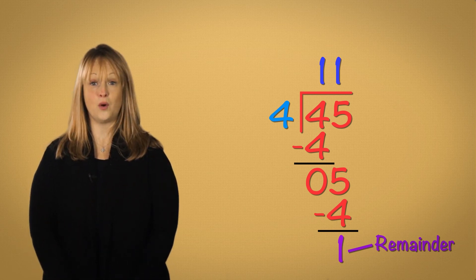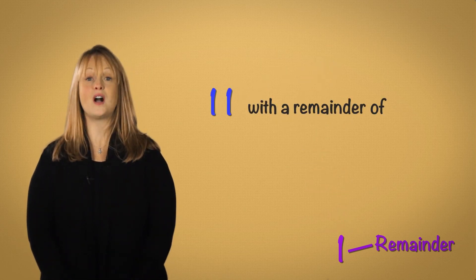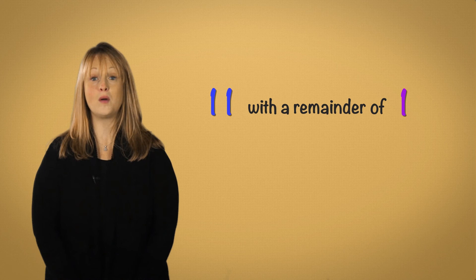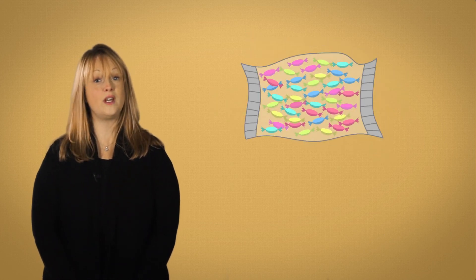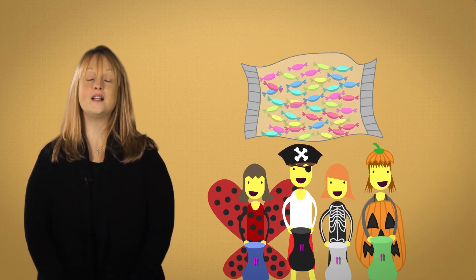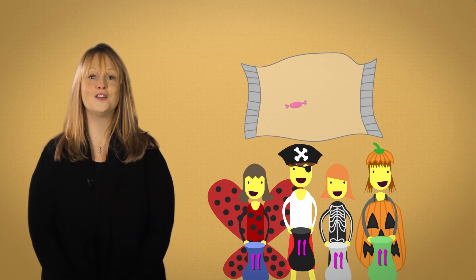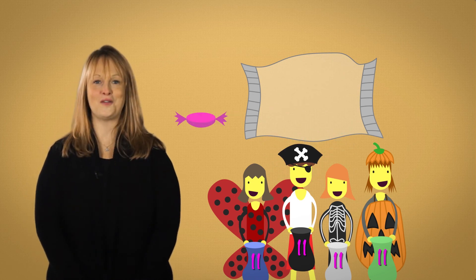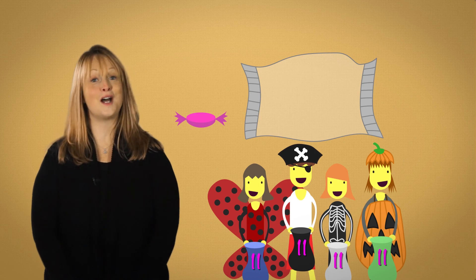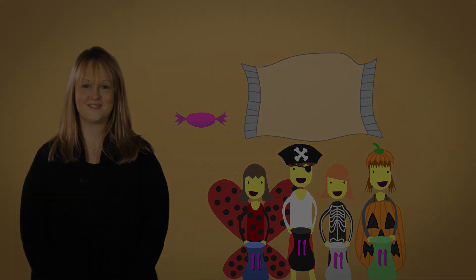Forty-five divided by four is eleven with a remainder of one. So from our bag of forty-five candies, we could give each of the four trick-or-treaters eleven pieces each. And look, we have one left over for ourselves. Sometimes math can taste pretty good. Hooray!